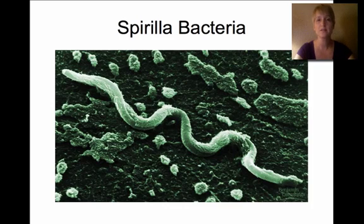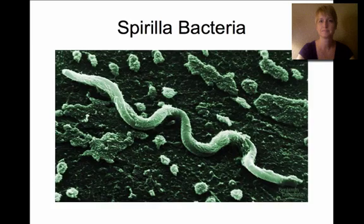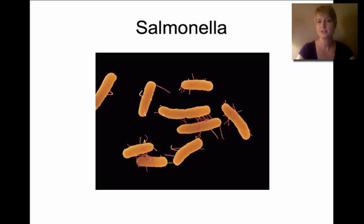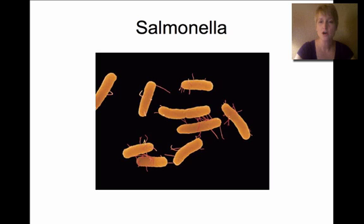Spirilla bacteria are long spiral-shaped bacteria cells. Salmonella is another bacteria that can cause food poisoning — you'll see that it's rod-shaped. Salmonella is actually very common on reptiles, which is why we always have to wash our hands after handling any type of reptile.